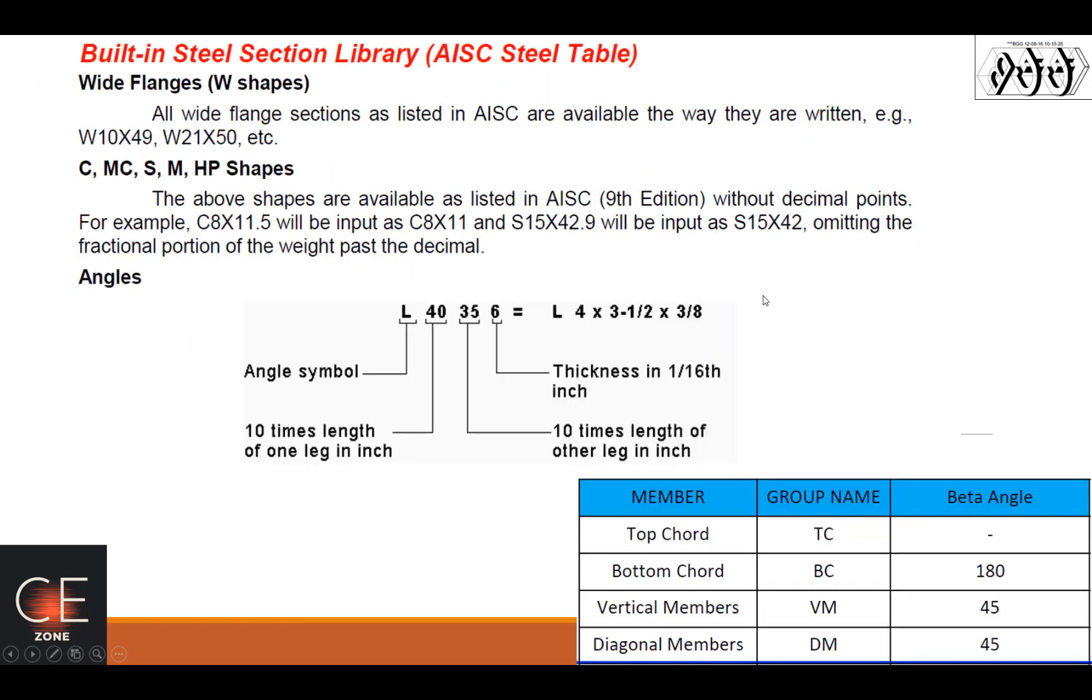And if we try to use the STAD software with respect to the angles, so you will be coming up with this list with respect to angles. So on this notation, if you have seen this one in STAD, the first two digits should be divided by 10 to get the length. And then the second two digits there, it's also divided by 10 to get the length of the other leg. And then the thickness, the last digit there should be divided by 16.